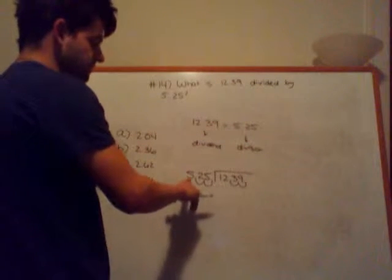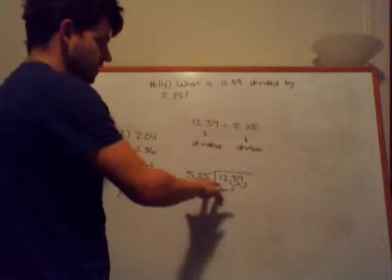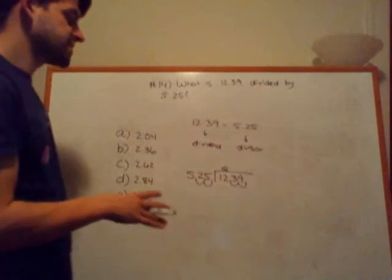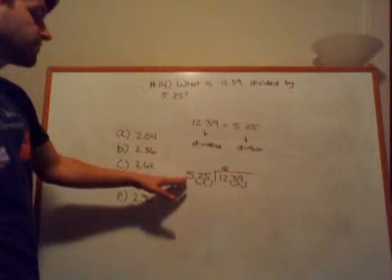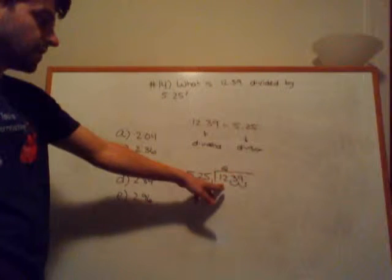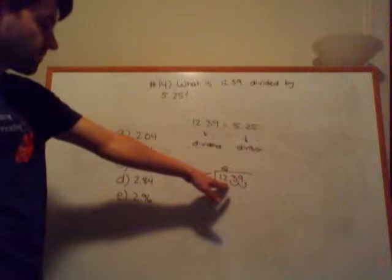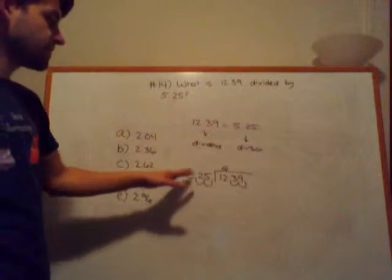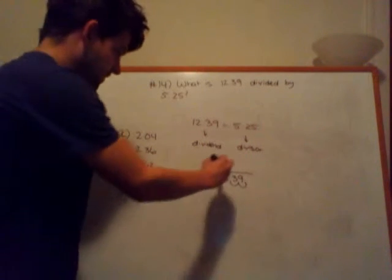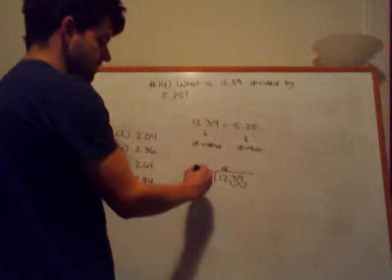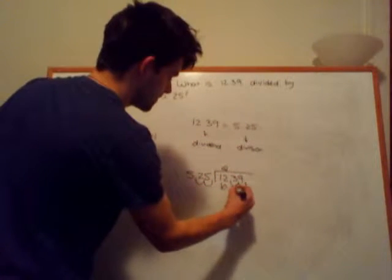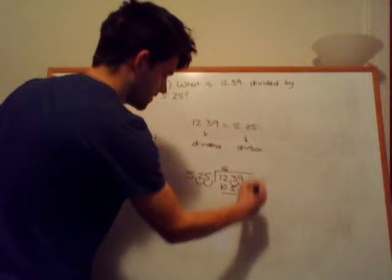Now 5 goes into 12 twice, and you can logically deduct that by saying if you take 5 and you multiply it by 2, you get 10, so that's not going over 12. But if you do 5 times 3, you'll get 15, which is too large of a value. So 525 times 2 is 1050. And then when you make that subtraction, you'll get 189. 3 minus 5, you can't do. Carry the 1, take from the 2. 13 minus 5 is 8. 1 minus 0 is 1, and 1 minus 1 is 0.